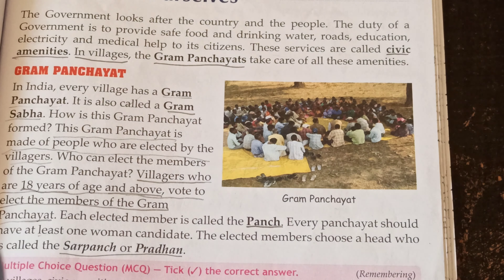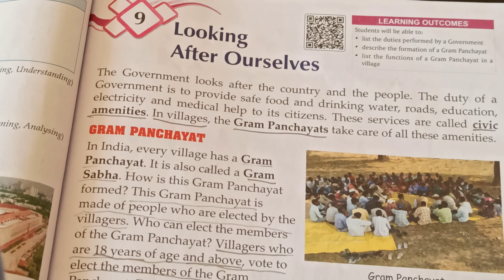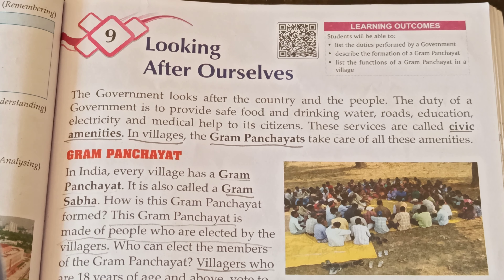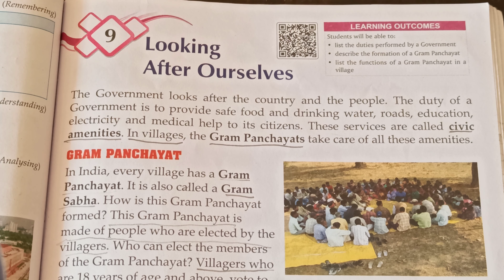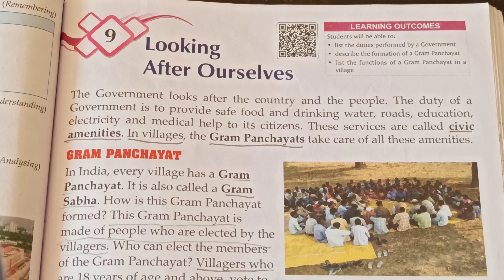Kids, today we start our new chapter, the 9th one — looking after ourselves. The government looks after the country and its people. The duty of government is to provide safe food and drinking water, roads, education, electricity, and medical aid to its citizens. These services are called civic amenities.